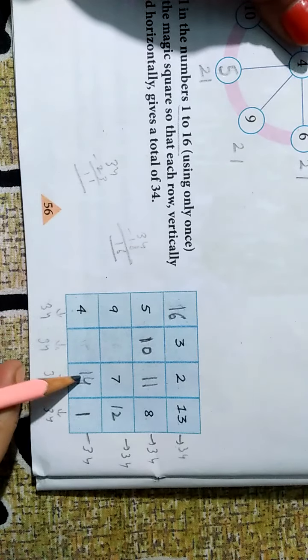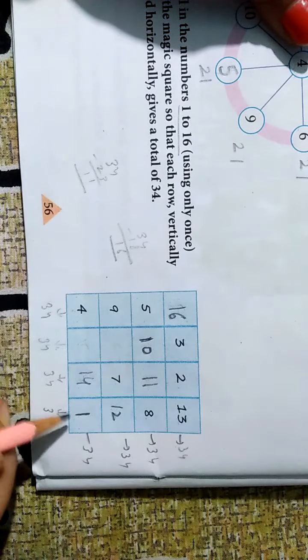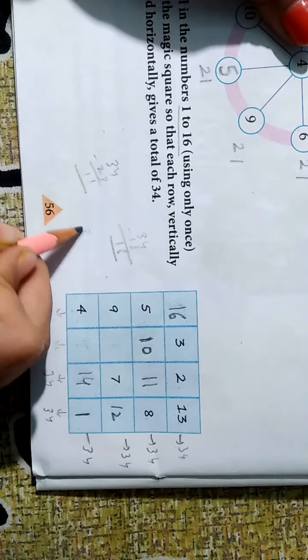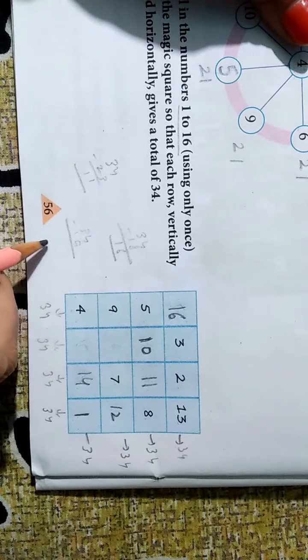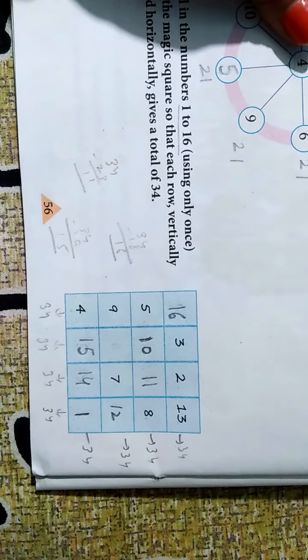One, two, three. Yeh missing hai. Ek hi nikal sakti hai. Fourteen plus four is eighteen. Eighteen plus one is nineteen. To thirty-four minus nineteen kitna hoga? Five to one. Fifteen. To kitna hoga yeh? Fifteen. Correct?